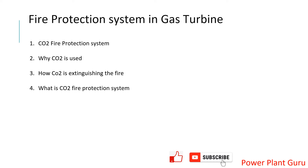Let us understand the fire protection system in gas turbines. Normally there are three types of fire protection systems: halon-based (FM-200), CO2 flooding system, and water mist. These are three NFPA-approved fire protection systems for various equipment. In the case of gas turbines, CO2 is used. We will cover why CO2 is used, how it extinguishes fire, and what equipment and auxiliaries support the system.